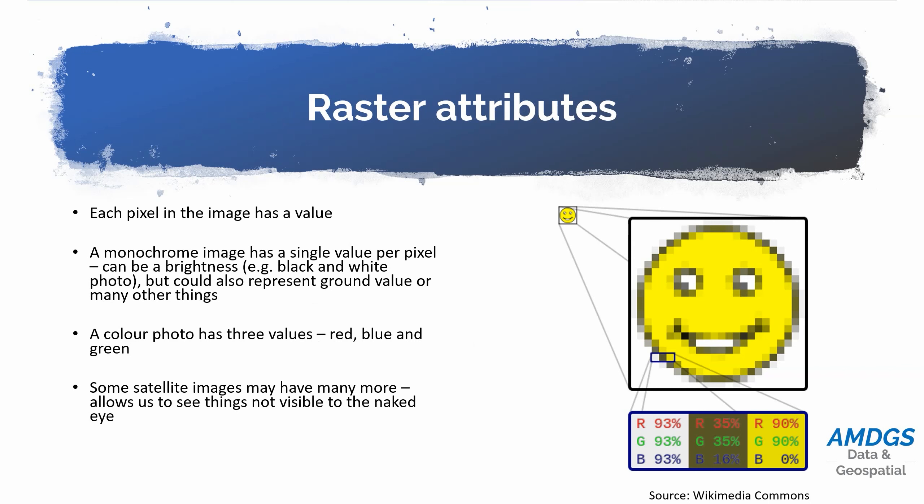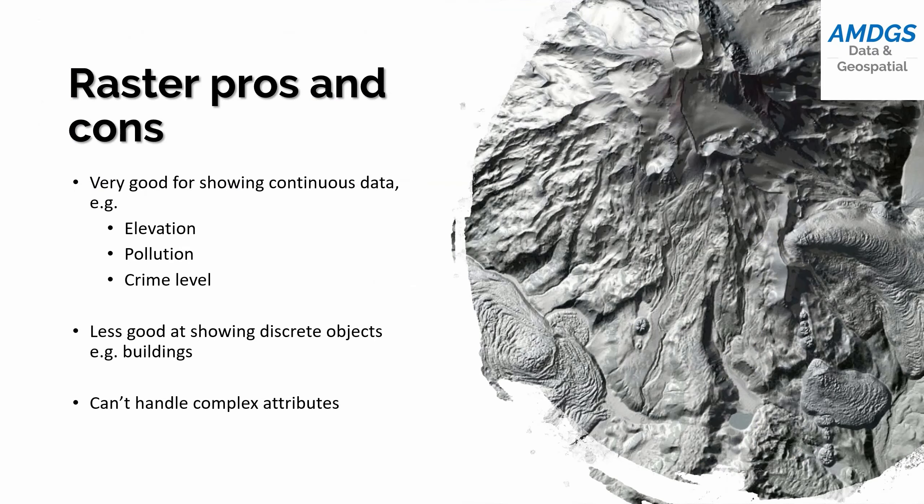So essentially that's how rasters work — a series of squares of regular size with one or more values associated with each, which could be a colour if it's a photo or satellite image, or could be height, a pollution level, or anything else we're trying to represent continuously across an area. That's what rasters are good for: showing continuous data.